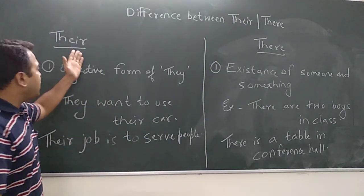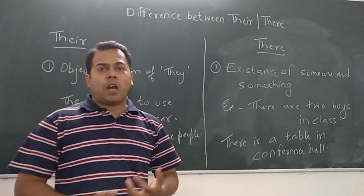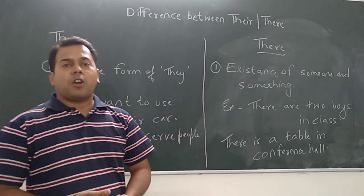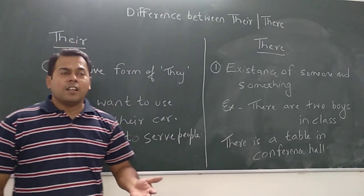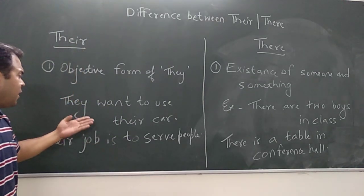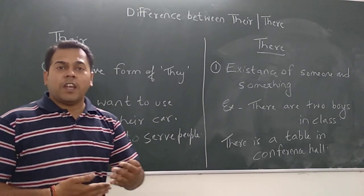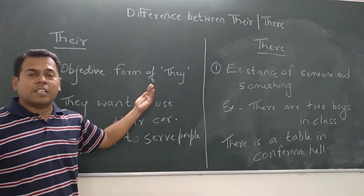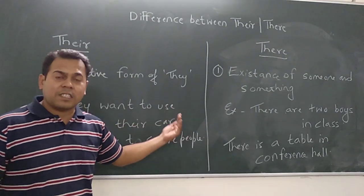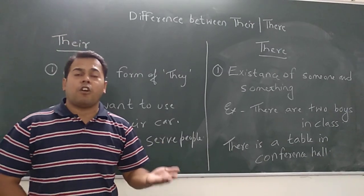Let's start. T-H-E-I-R there is an objective form of they. It is a possessive pronoun which is used to show some kind of objective things or sentences. You can see in the sentence it is written: they want to use their car. That means they want to use their car.